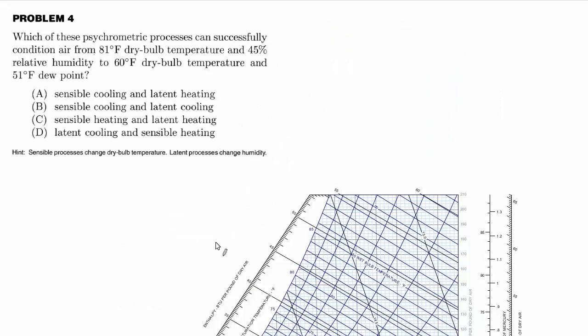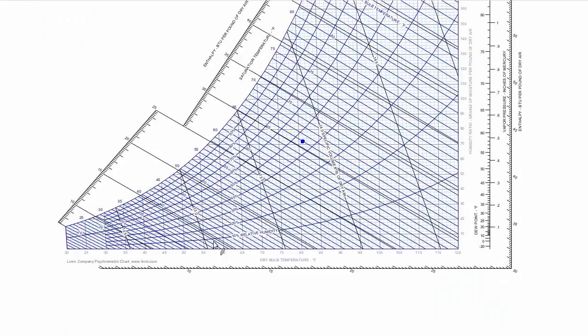And then it's going to 60 degrees and 51 degree dew point, which is about right there. So when you're finding this second point, you go on the horizontal axis to 60 degrees dry bulb.